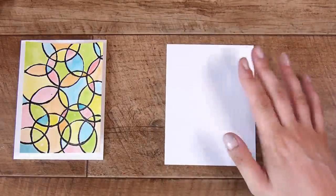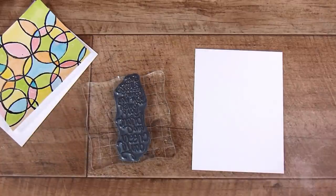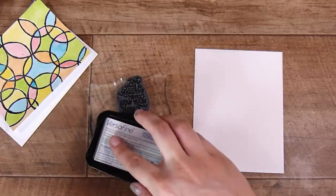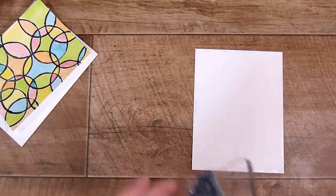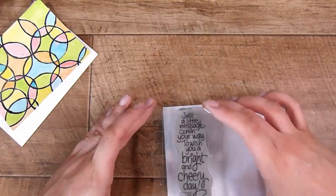Now we are moving on to this next one. I have this stamp here, this is called the Cling Cherry Day, and for whatever reason I just really love this one. I am going to stamp this out in some Versafine Onyx Black ink. This is just a little message coming your way to wish you a bright and cherry day.